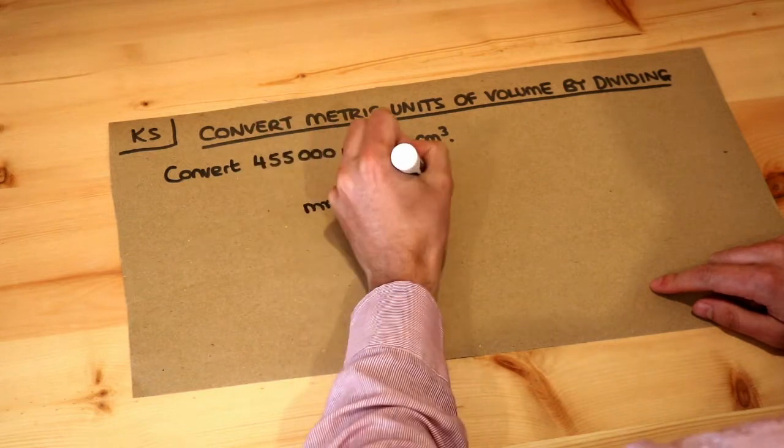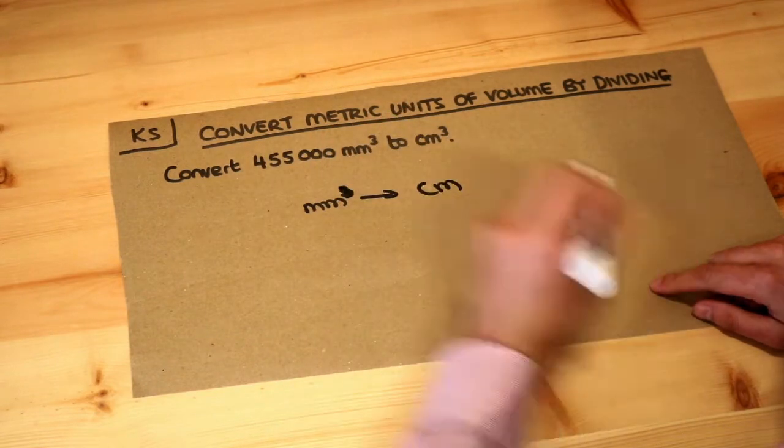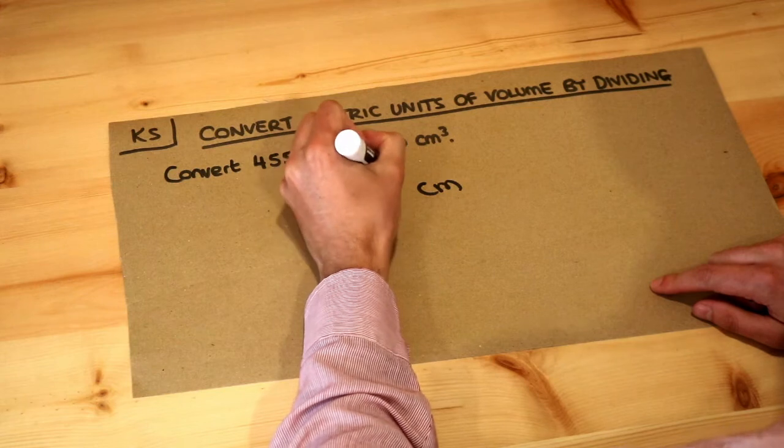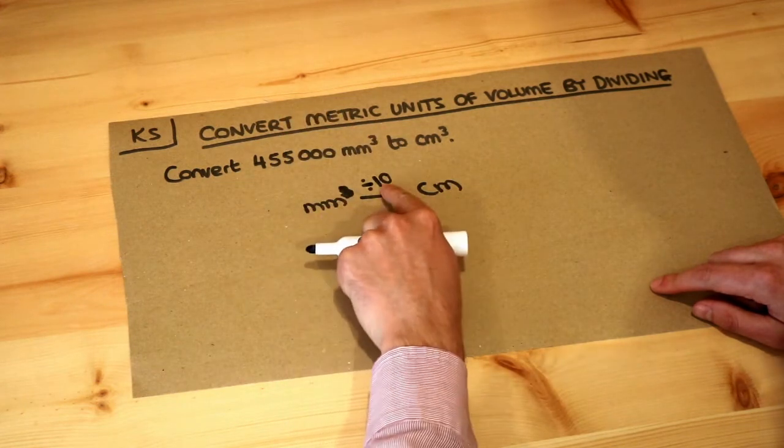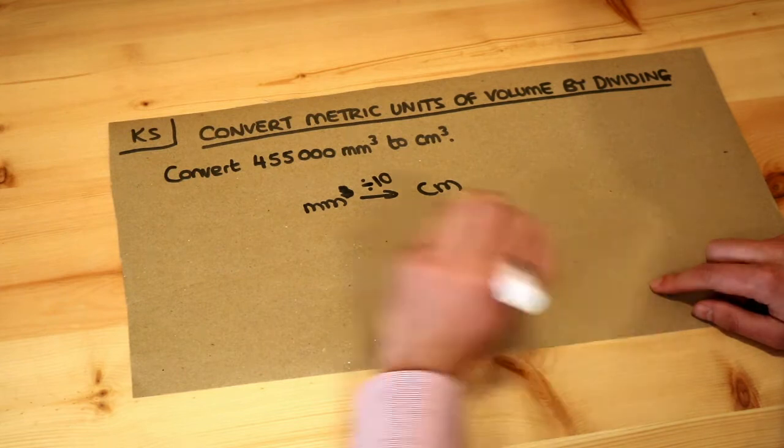If we're going from millimeters to centimeters, we divide by 10. For example, if I had 20 millimeters, I'd divide by 10 to get 2 centimeters.